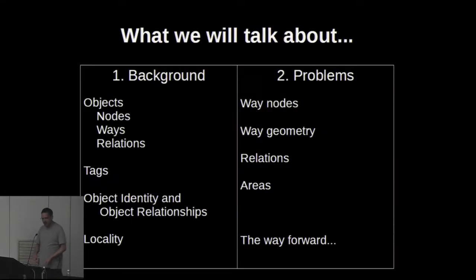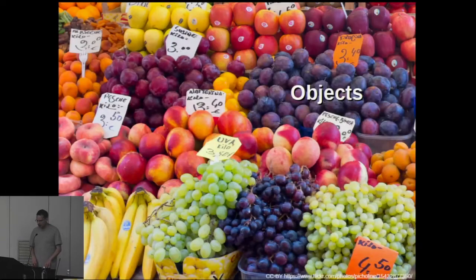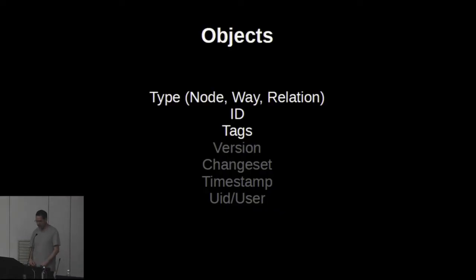This is what I want to talk about. First, a bit of background: how objects — nodes, ways, relations in OSM — have tags, what object identity and object relationships mean in OSM, about locality in our data. An object has a type, a unique ID per type, tags, and also a version, change timestamp, user ID and username on those objects.